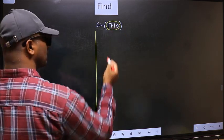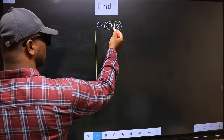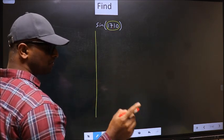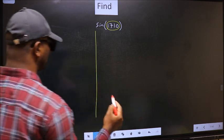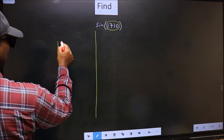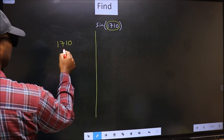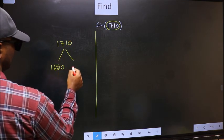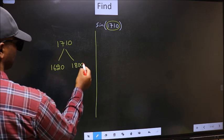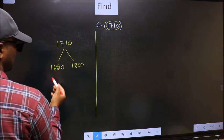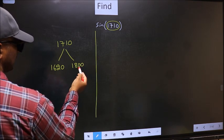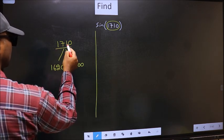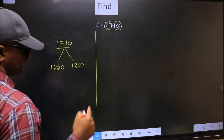Now we should check 1710 lies between which two multiples of 180. What I mean is 1710 lies between 1620 and 1800. This is 180 into 9 and this is 180 into 10. Between these two numbers, 1710 lies.